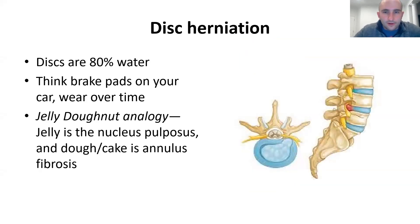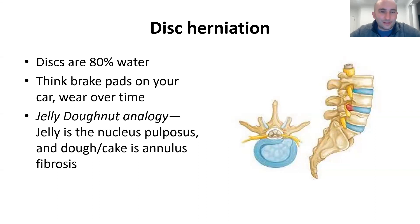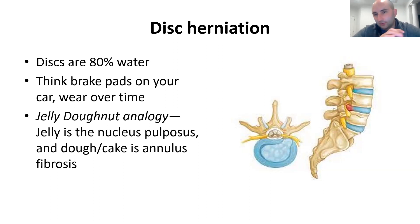For a disc herniation, I use the analogy of brake pads — they wear out over time. We don't have the same spine at 80 as we did at 8. The discs are filled with a jelly called the nucleus pulposus — an embryonic remnant of the notochord, worth remembering for boards. I use the jelly donut analogy: the nucleus pulposus is the jelly, the annulus fibrosus is the donut. In a disc herniation, the jelly has squirted out, causing symptoms.